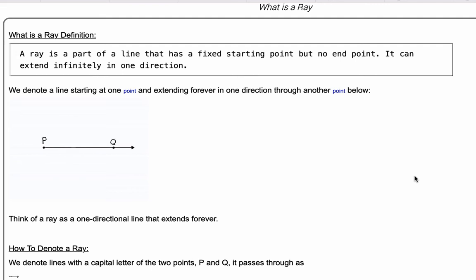What is a ray? A ray is a part of a line that has a fixed starting point but no end point, and it extends infinitely in one direction.